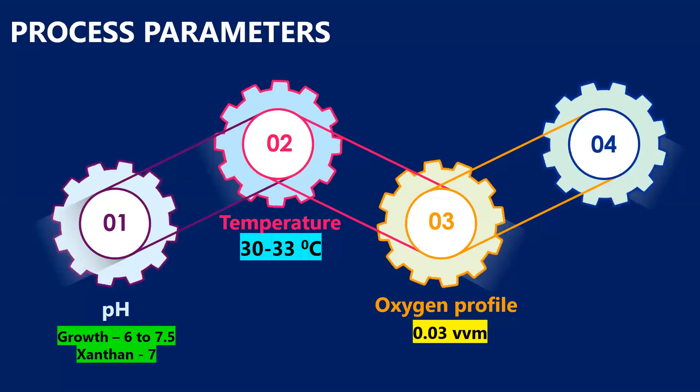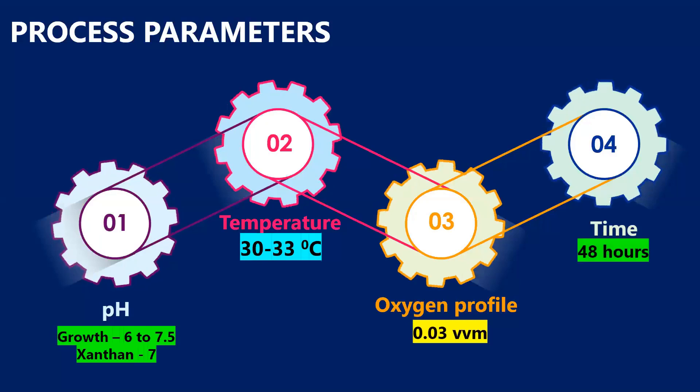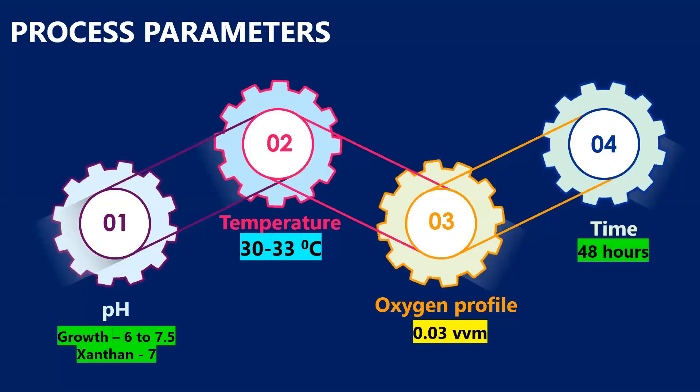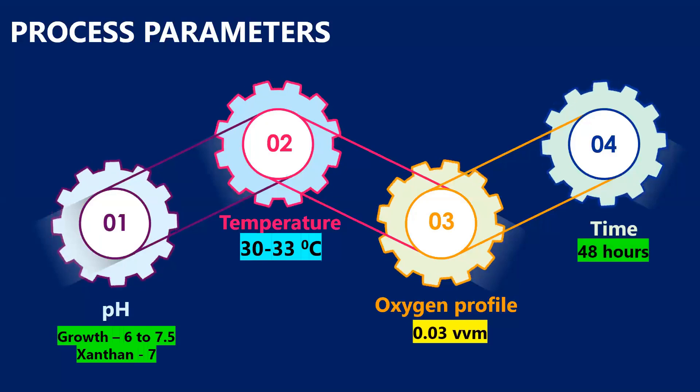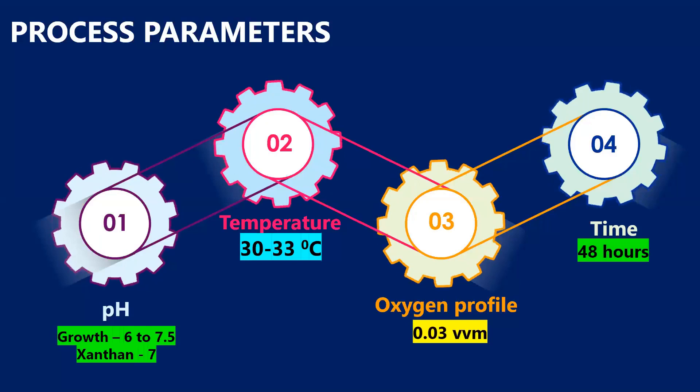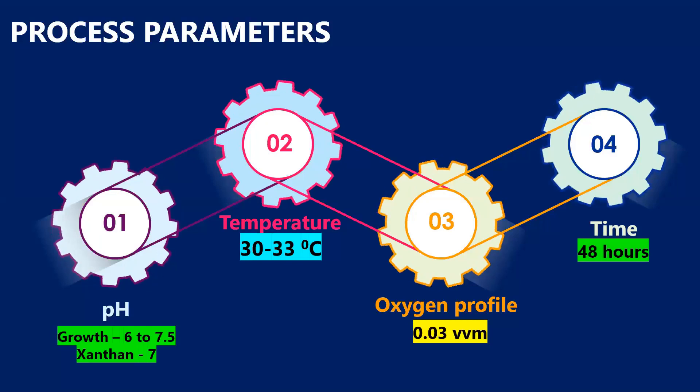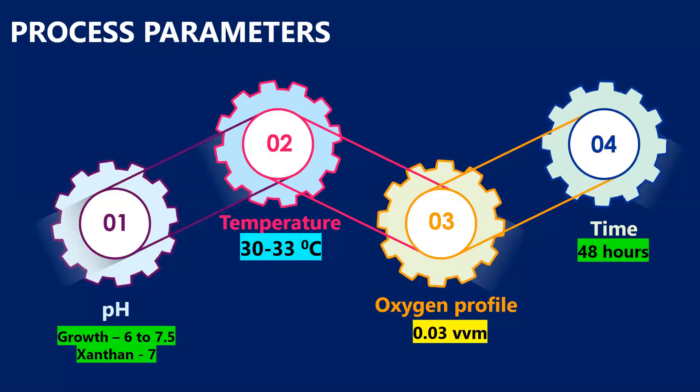Next, the time of fermentation: how much time is required? It is observed that at 48 hours we get maximum yield of xanthan, beyond which there is no significant production of xanthan.